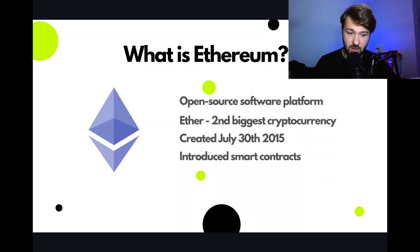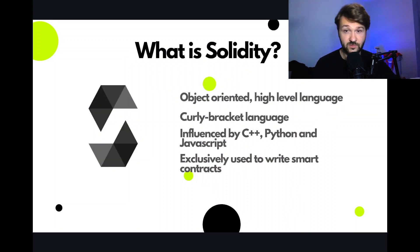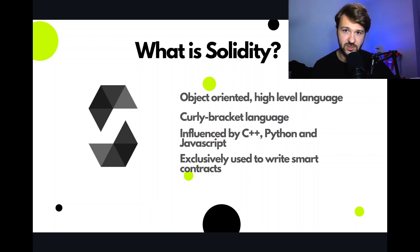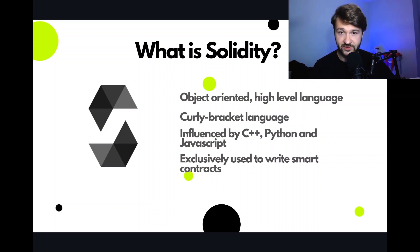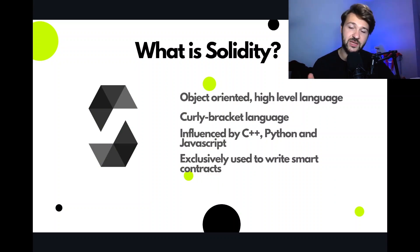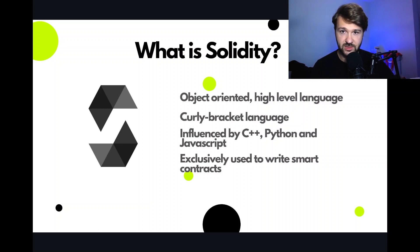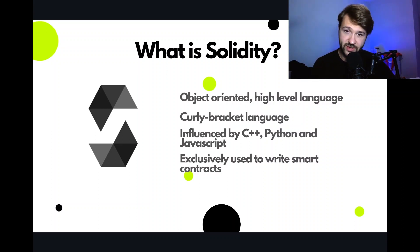Ethereum is built on a programming language called Solidity. What is Solidity? Well, it's an object-oriented, high-level language — a curly bracket language much like JavaScript. In fact, C++ and Python are among the languages that influenced Solidity when it was being built. This language is exclusively used to write smart contracts on Ethereum.